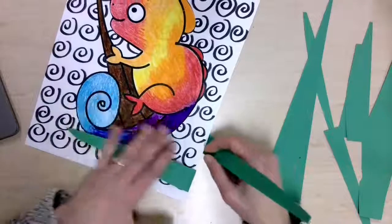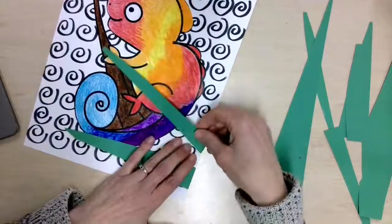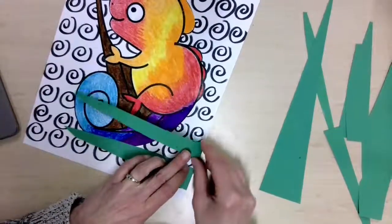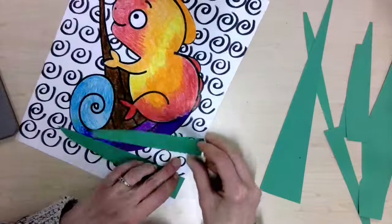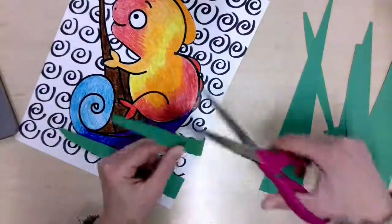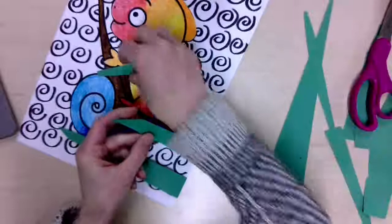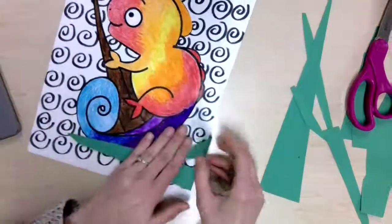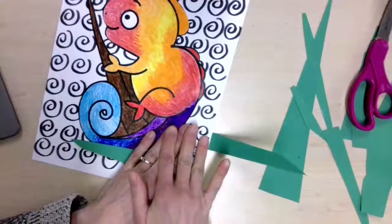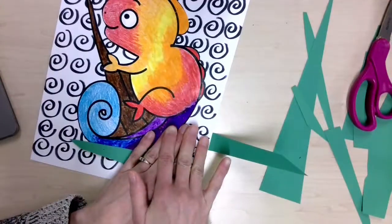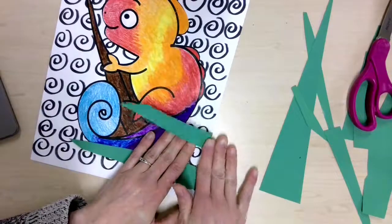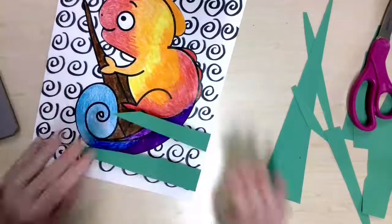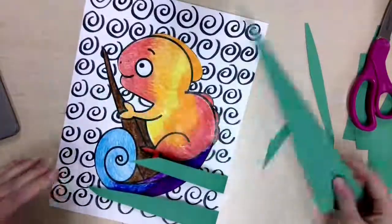I might use my scissors to trim this guy so it's a little bit shorter. One, two, three, four, five, six, seven, eight, nine, ten. Fold it over. Let's take a look. A little bit of variety—I'll go longer, I'll go shorter.